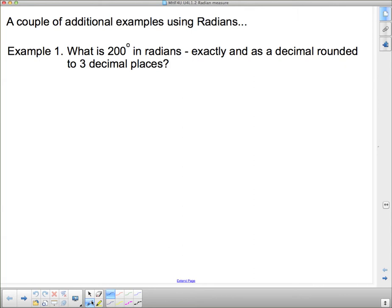So example number one: What is 200 degrees in radians, exactly and as a decimal rounded to three decimal places? So if we want 200 degrees in radians, we're going to have to start where we always start, and that is by knowing that 180 degrees is pi.